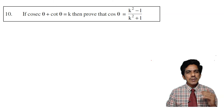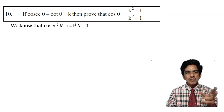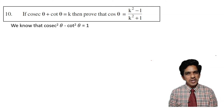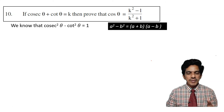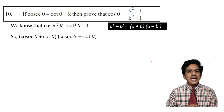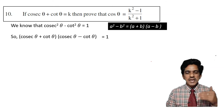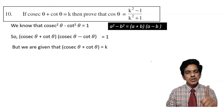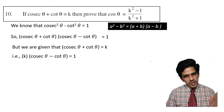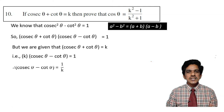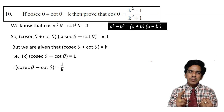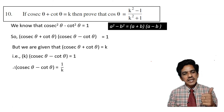We are given cosecant theta plus cot theta equals k. Using the identity cosecant square theta minus cot square theta equals 1, we factor it as a plus b into a minus b to get cosecant theta plus cot theta into cosecant theta minus cot theta equals 1. Substituting k for cosecant theta plus cot theta, we have k into cosecant theta minus cot theta equals 1. Transposing k, cosecant theta minus cot theta equals 1 by k. So we now have two expressions: cosecant theta plus cot theta equals k, and cosecant theta minus cot theta equals 1 by k.